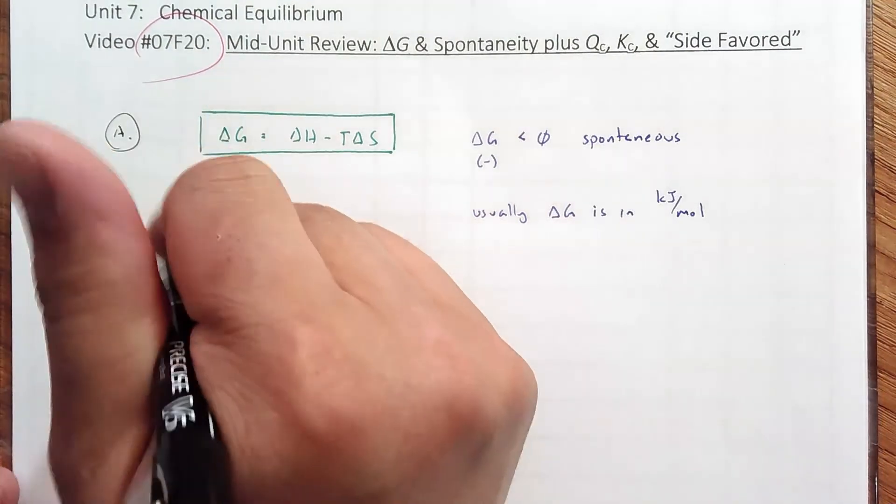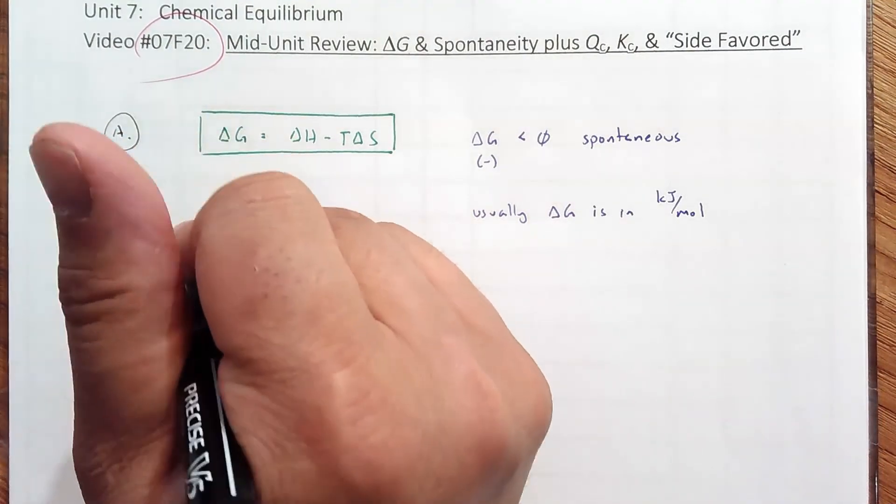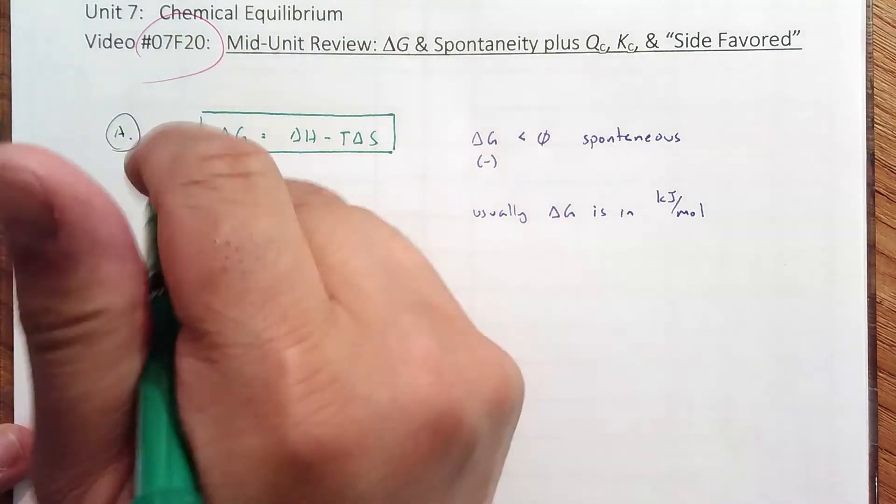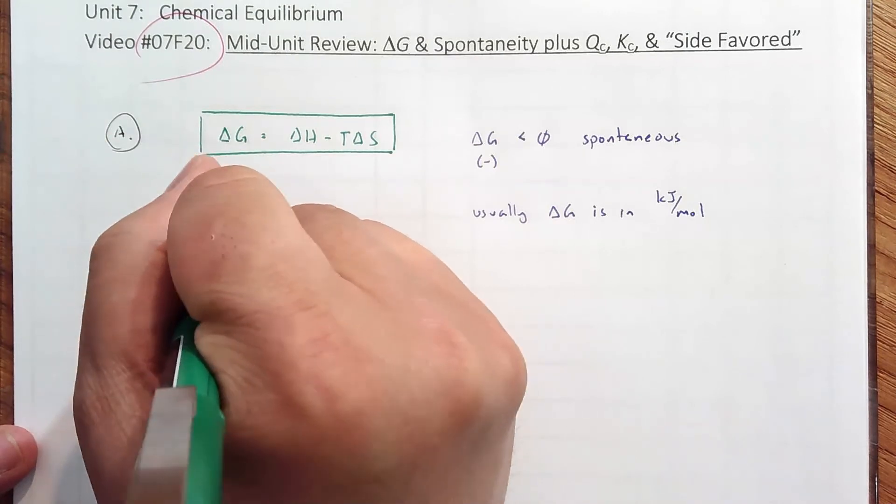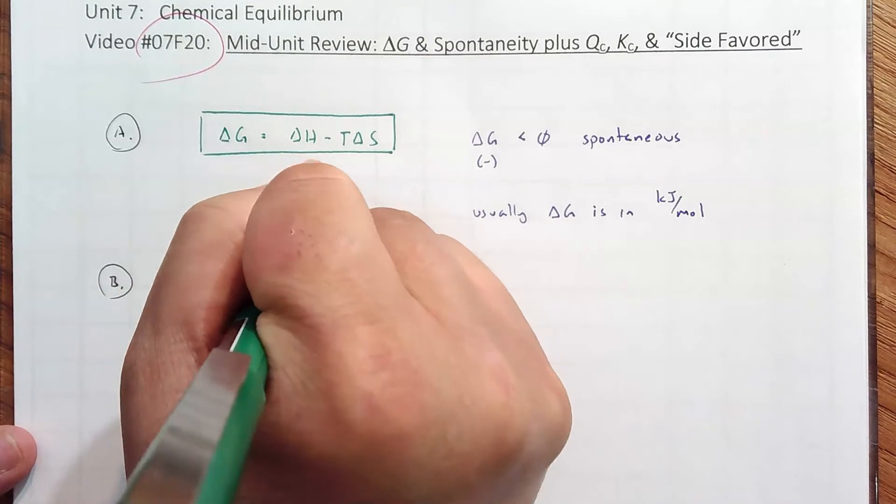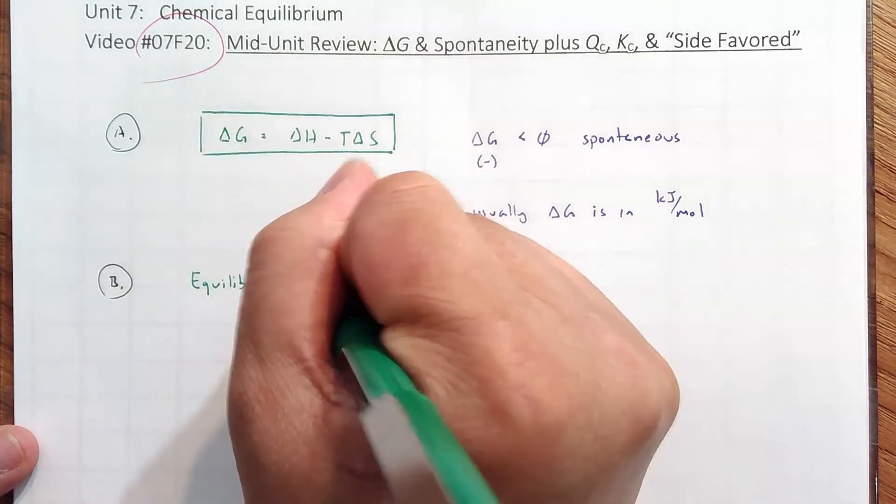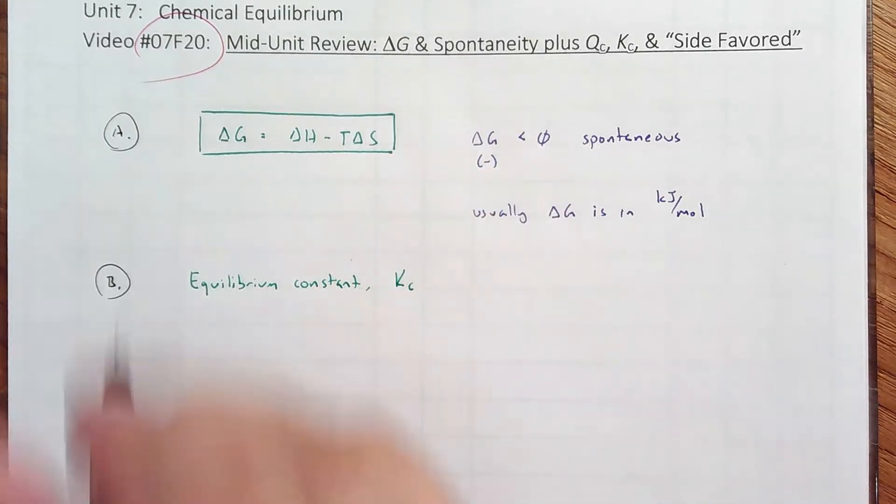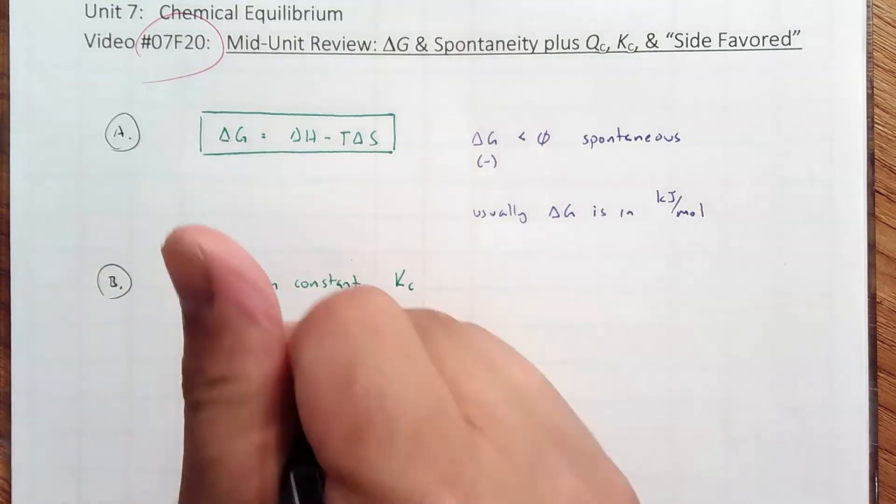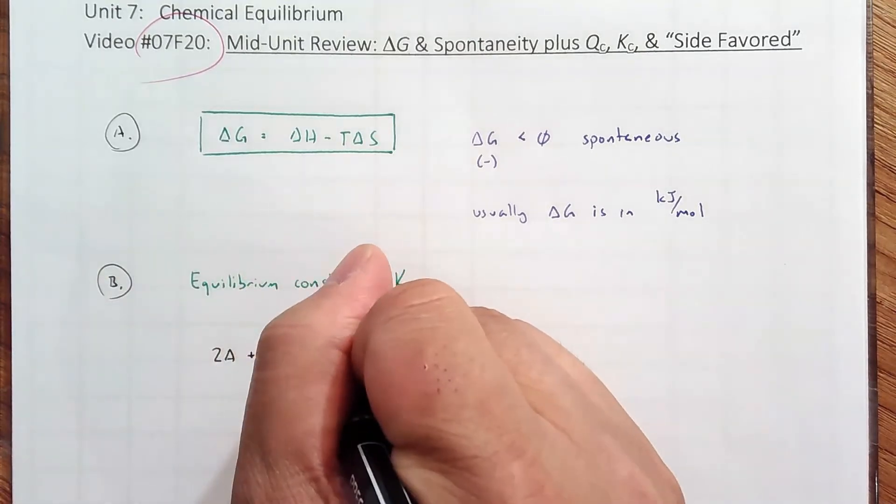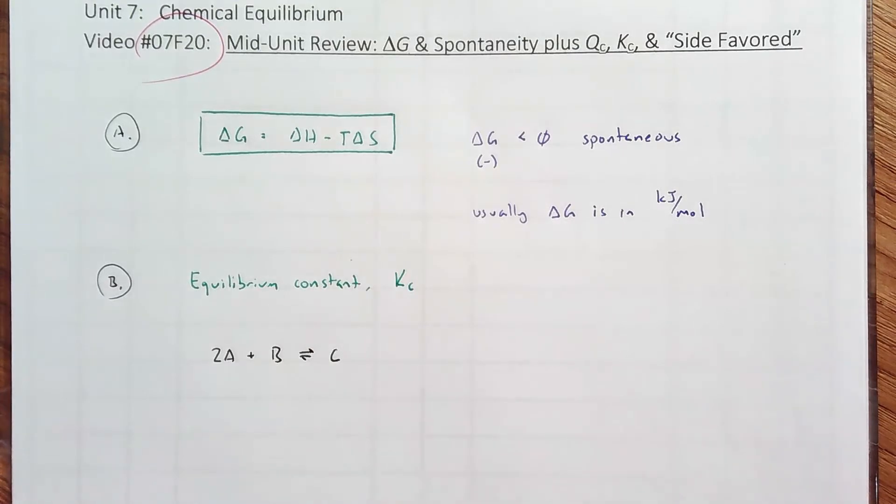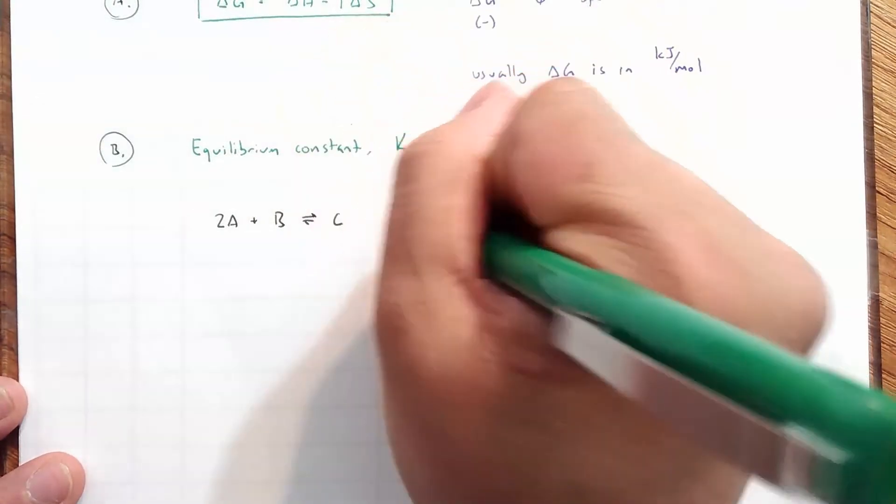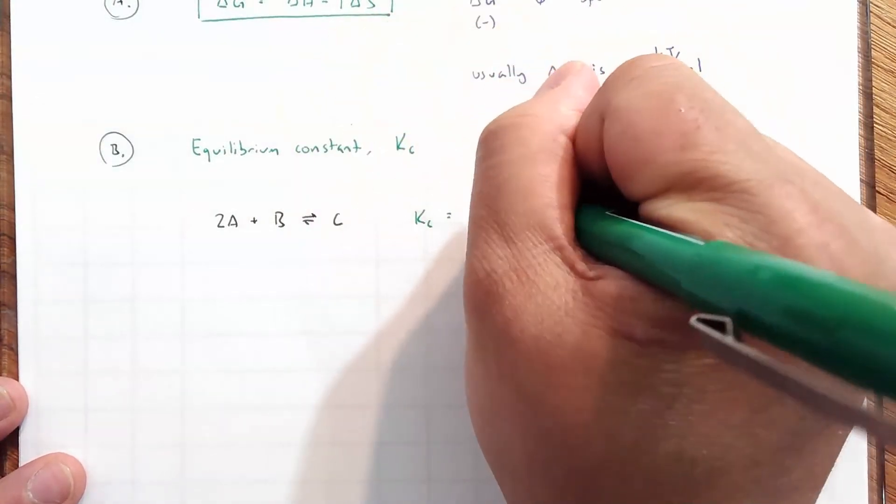Let's have a general reaction, 2A plus B goes to C. So in this case, we are solving for the equilibrium expression or the equilibrium constant. If we have that reaction that I described, 2A plus B in equilibrium with the product C, then you should know that the expression is Kc equals concentration of the products over reactants.